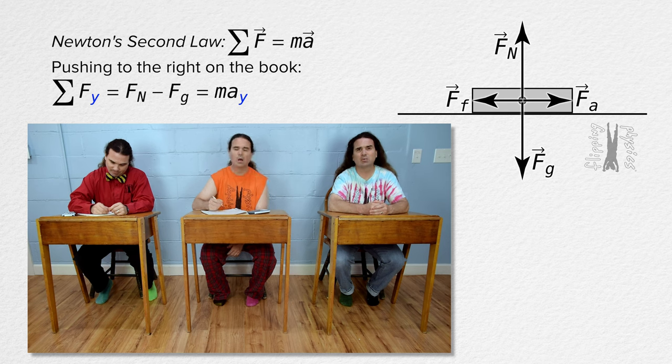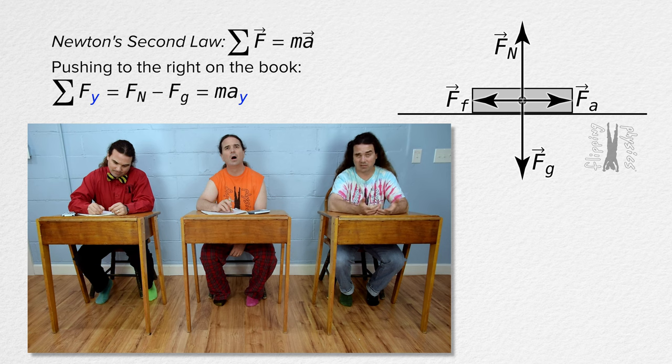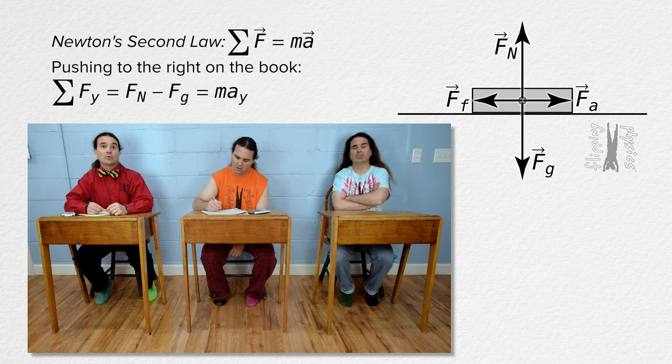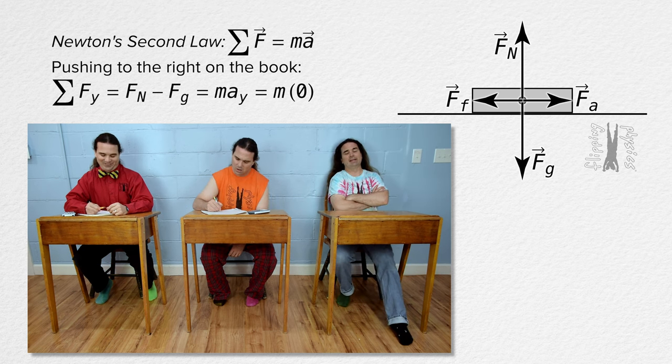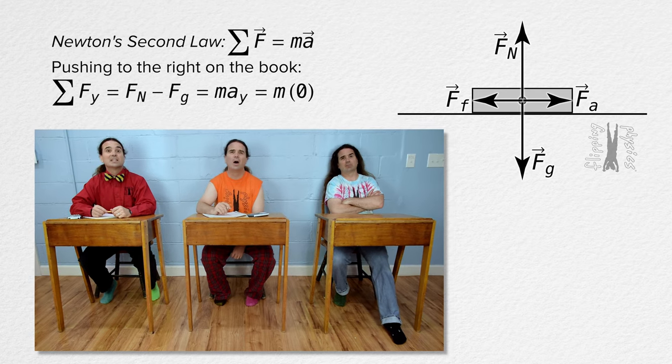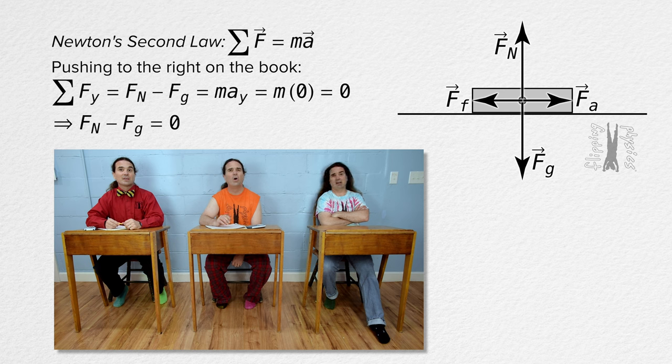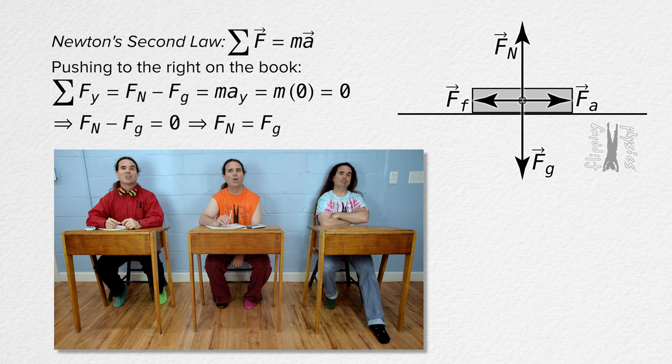Because the book is not moving in the y direction and is still not moving in the y direction, it is also not accelerating in the y direction. That means the acceleration in the y direction equals zero and anything times zero equals zero. That means force normal minus force of gravity equals zero. And we can add force of gravity to both sides. And we get force normal equals force of gravity. Thank you, Bo.